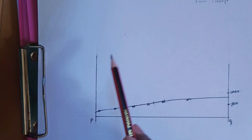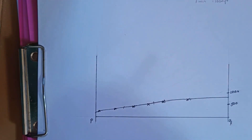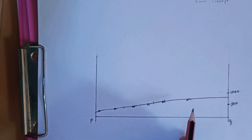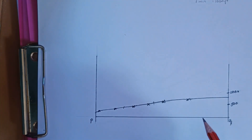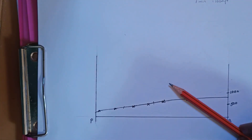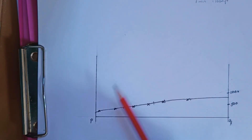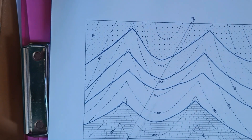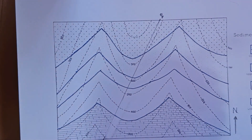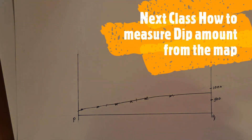The beds are exposed at these outcrop points. But we don't know how the beds are dipping — whether in this direction or that direction. So we have to find out the strike direction and the dip direction to determine how the beds are oriented. The cross-section is now complete, and we'll see you in the next session.